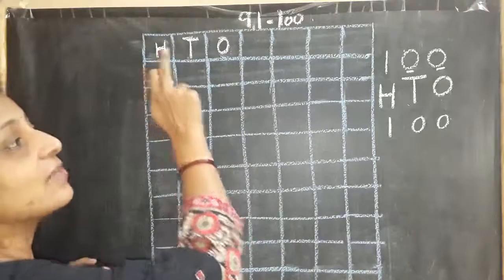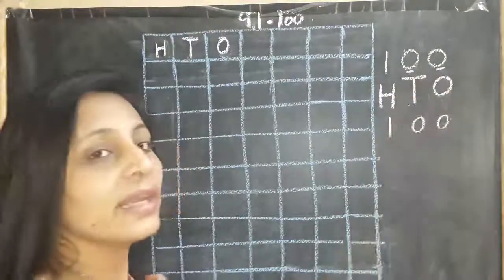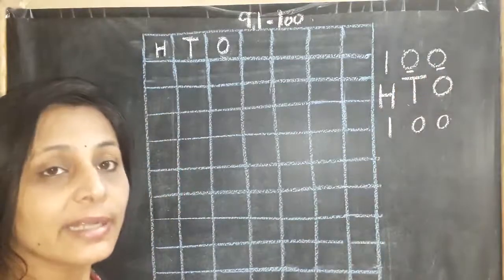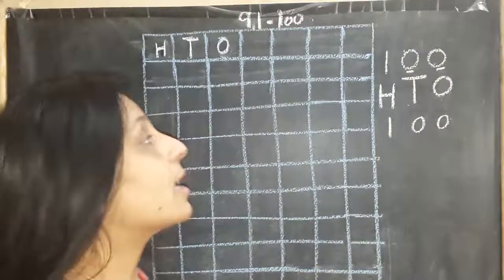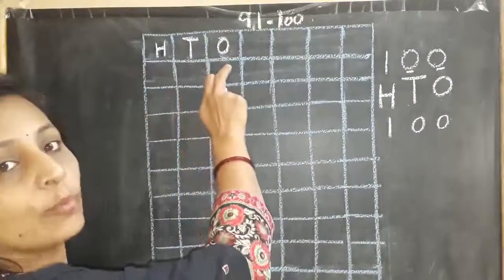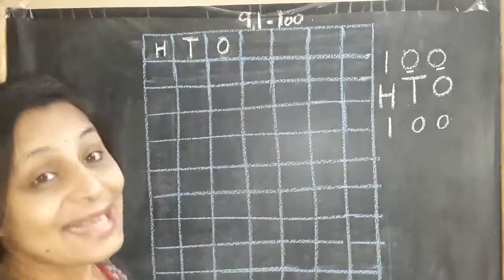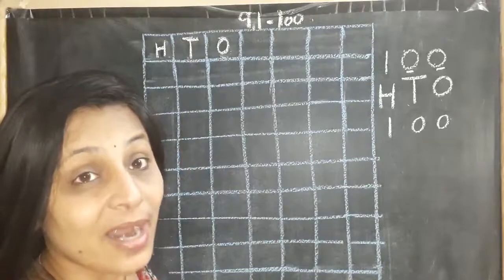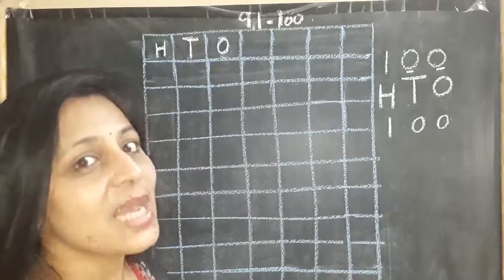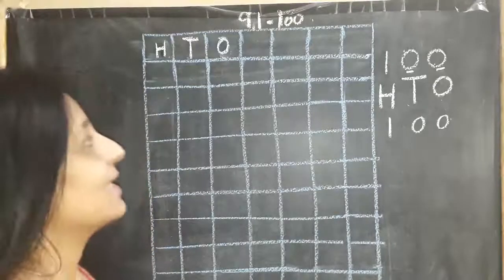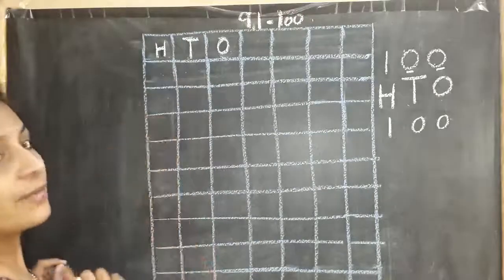When there are 3 digits, we have to write those numbers under H, T, and O box. I hope you have understood. Now let's write 91 to 100 in the box, and children, you are going to say with me aloud. Shall I write 91 here? 9, 1 — 91 here?